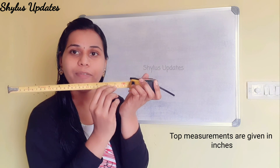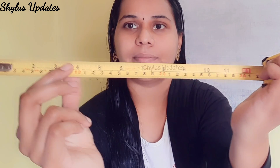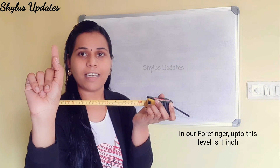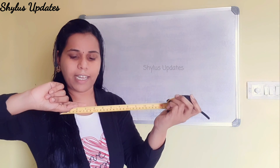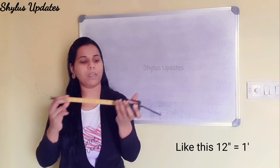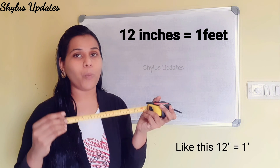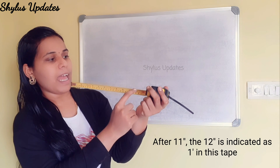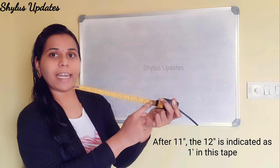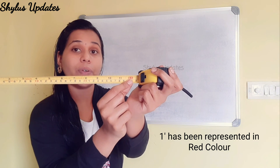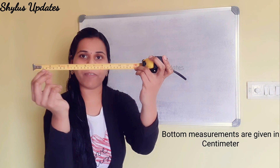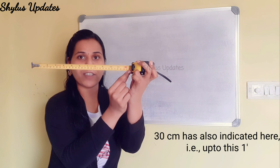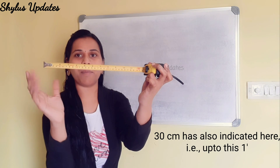The top measurements of this tape are given in inches: 1, 2, 3, 4, 5, 6, 7, 8, 9, 10, 11. After 11, the 12 inches is indicated as 1 foot — 1 foot is represented here in red color. The bottom measurements are given in centimeters. 30 centimeters is equal to 1 foot, and 30 centimeters has also been indicated here, which means up to this is 1 foot.